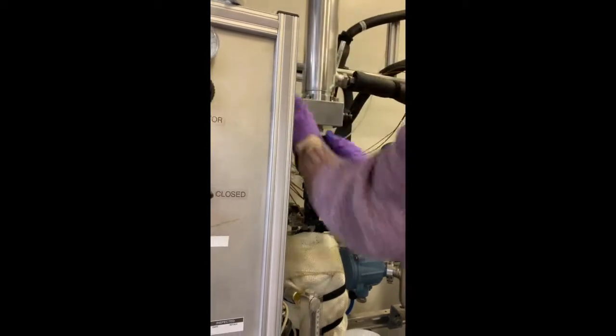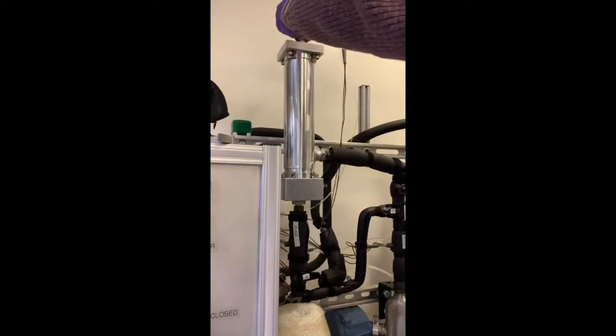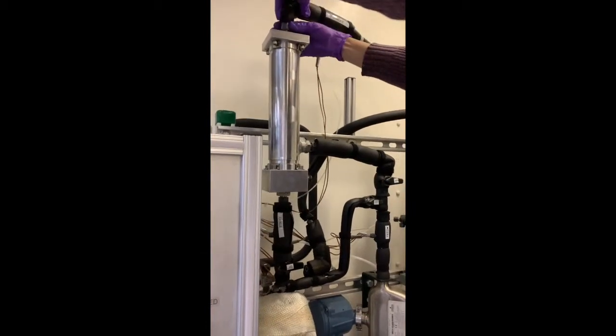The retentate side, seen here under the module, is where the solvent stays, while water moves through the membrane and is pulled out of the permeate side at the top.